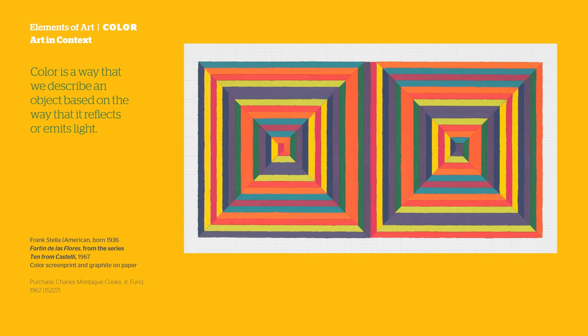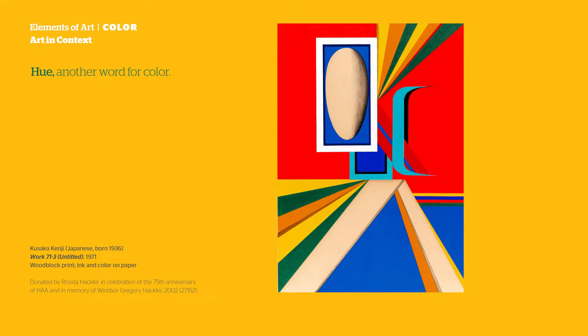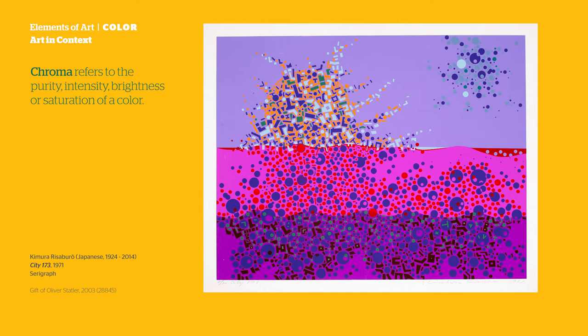When thinking about color and artwork, there are a few key terms to know: hue, chroma, and value. Hue is another word for color — for example, crayons are wax sticks of various hues. Chroma refers to the purity, intensity, brightness, or saturation of a color.